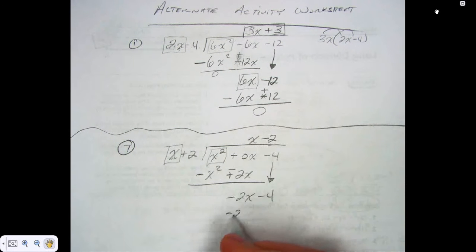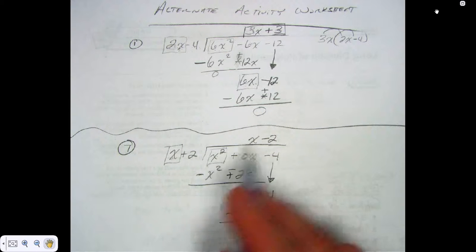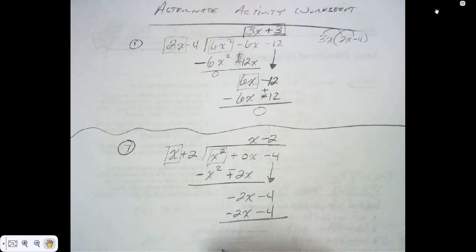x times what is negative 2? I get negative 2x as an answer. What do I have to do? Multiply here too. Change the sign, what do I get?